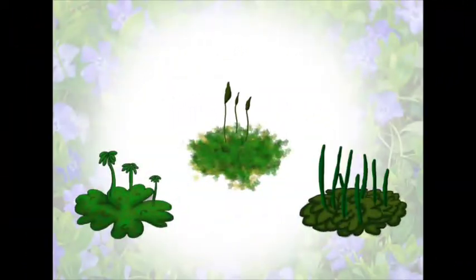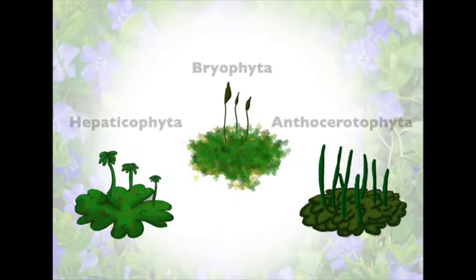The first group we will be talking about is the bryophytes, which are the nonvascular plants. There are three phyla: the hepatophyta, which are the liverworts; the bryophyta, which are the mosses; and the anthocerotophyta, which are the hornworts.